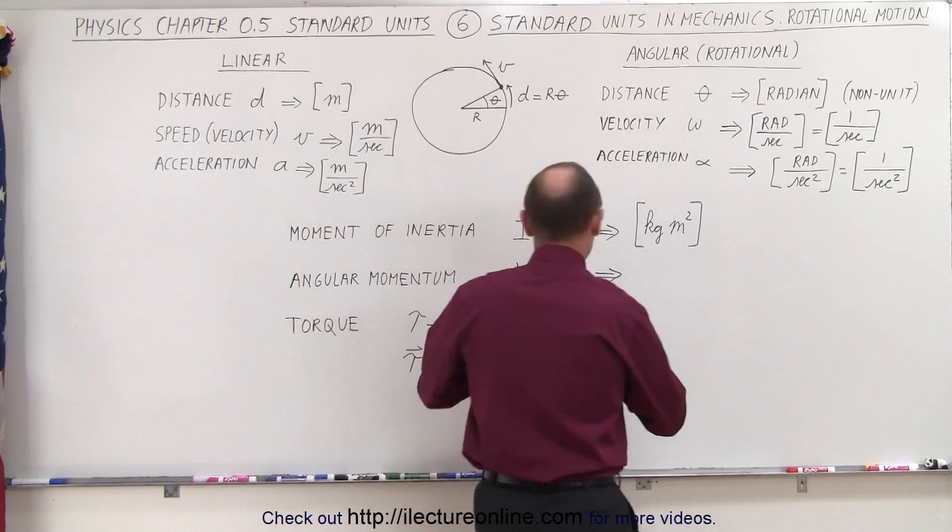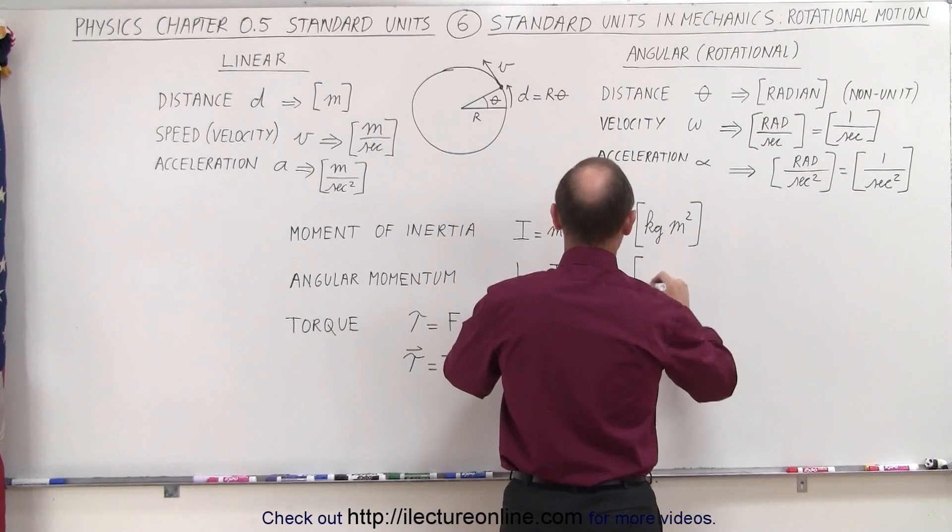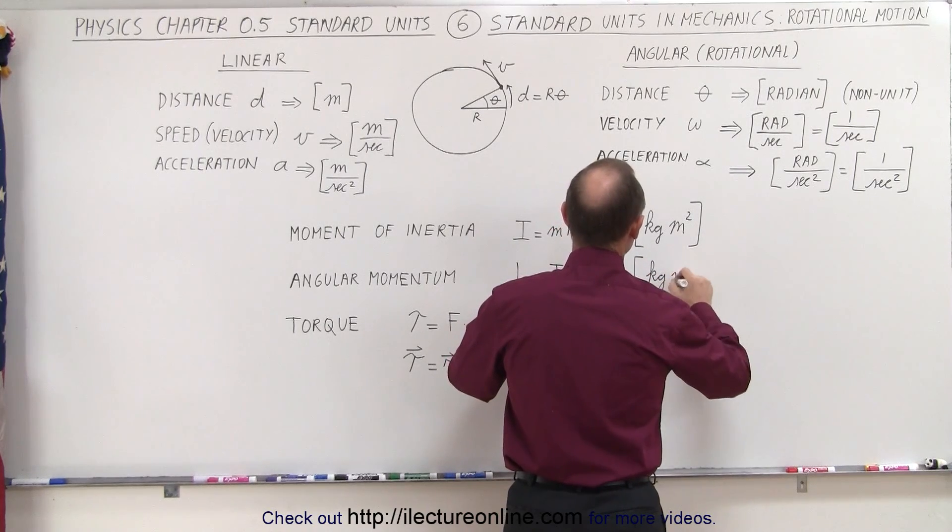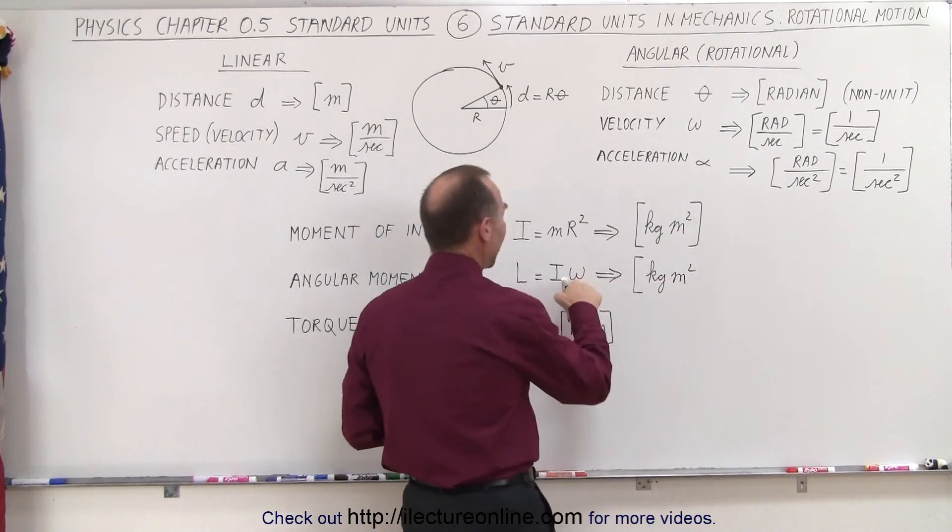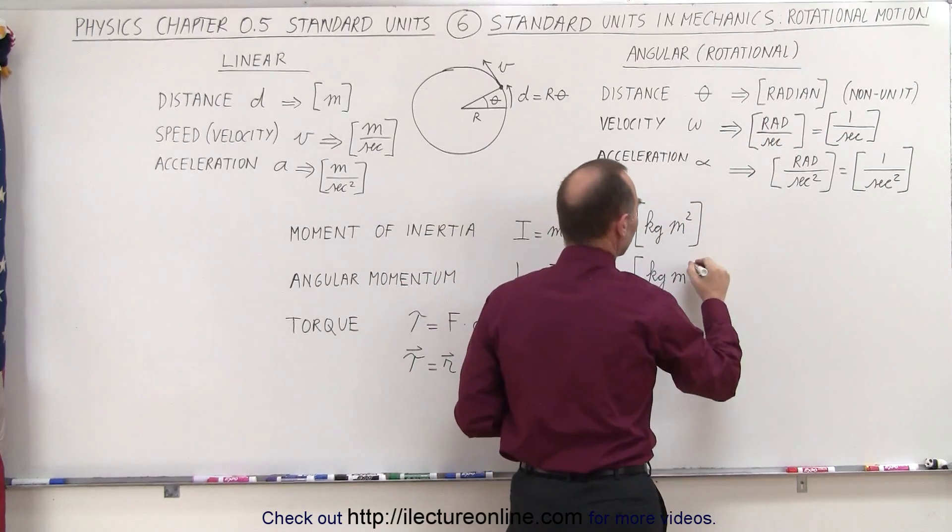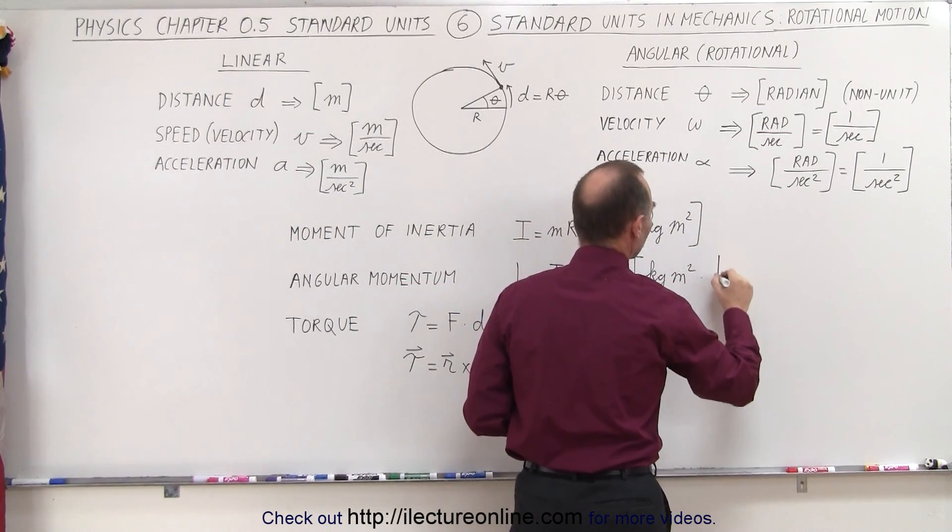The units in this case are, for angular momentum, we end up with kilogram, meter squared, and angular velocity is 1 over seconds. So we multiply this times 1 over seconds.